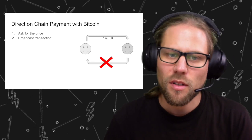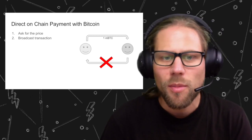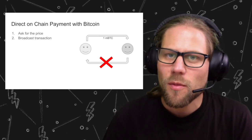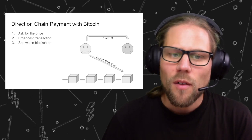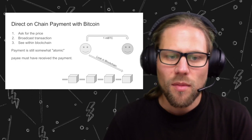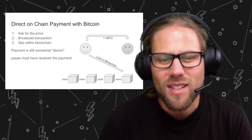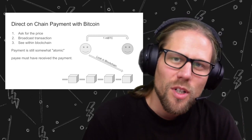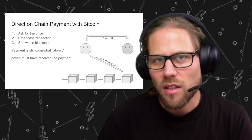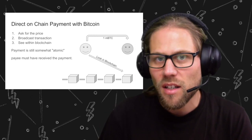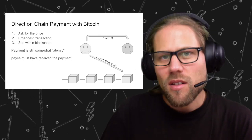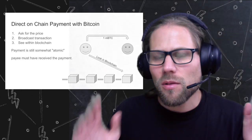On Bitcoin, it's a little different. You ask for the price, somebody says it's one milli Bitcoin, and then you broadcast a Bitcoin transaction. You don't get a receipt back from the person who receives it — instead you look at the blockchain, and at some point you see that the blockchain has confirmed. The payment is still somewhat atomic: you wait, and eventually the payment is either mined or declined by the miners. So it's atomic in that sense.